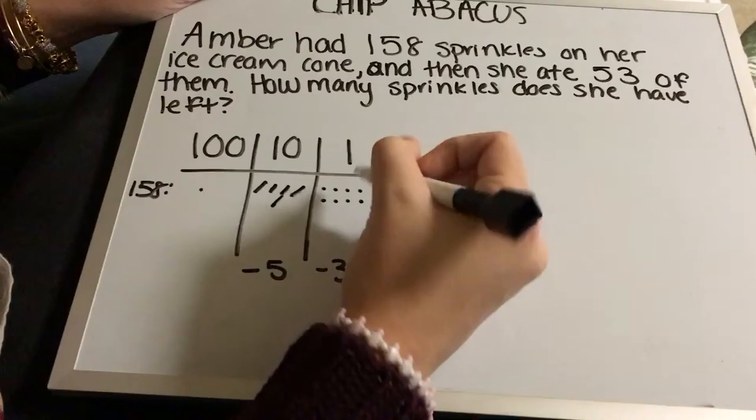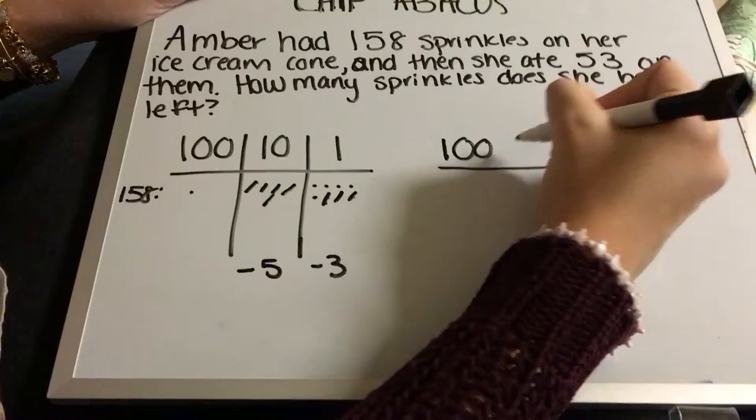We need to take away 53 sprinkles, so we're going to do minus 5 and minus 3 in the places that they belong. 1, 2, 3, 4, 5, and 1, 2, 3.